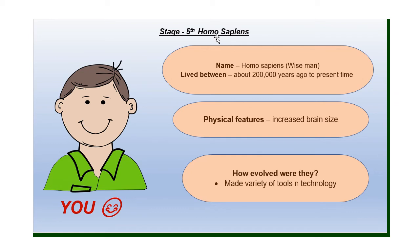Now, the last stage — Homo sapiens, also known as wise men, because they had a bigger brain than Neanderthals. Homo sapiens are you and me. They lived from 200,000 years ago to the present time. They have improvised all the inventions and discoveries made by the previous stages, and they have discovered and invented a lot of technology to improve their lifestyle and for the betterment of human life. They started agriculture and domestication of animals for their livelihood, and they started living a settled and stationary lifestyle.